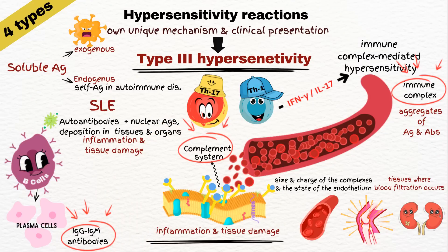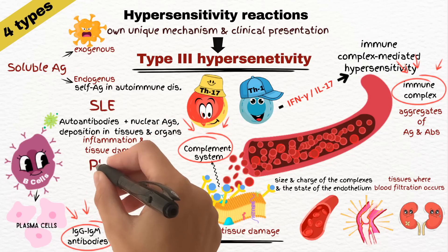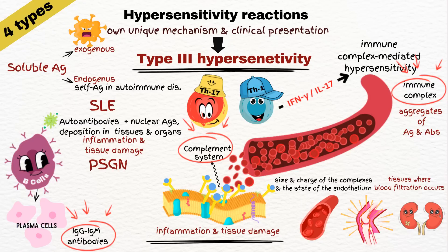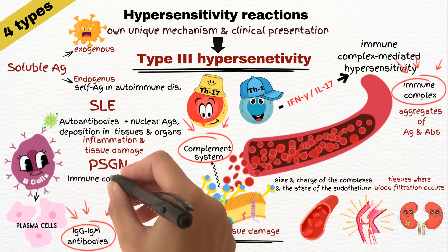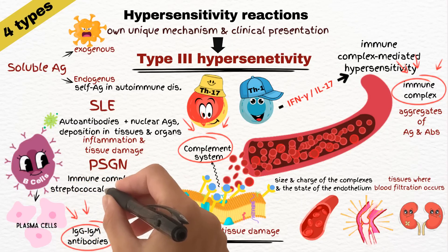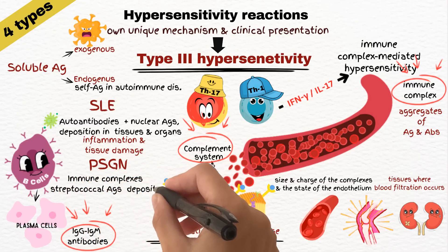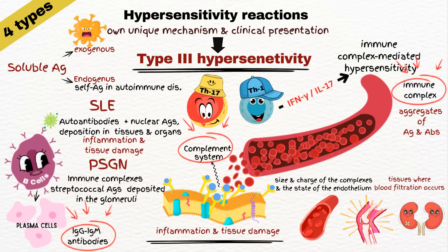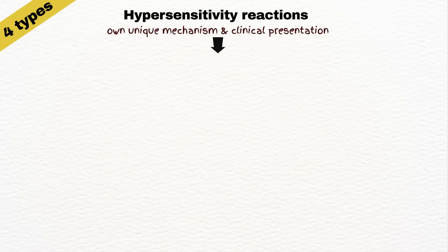Another example is post-streptococcal glomerulonephritis. Immune complexes formed in response to streptococcal antigens are deposited in the glomeruli of the kidneys, causing inflammation and impaired kidney function.